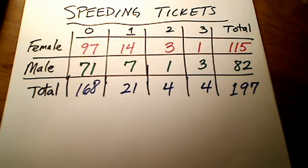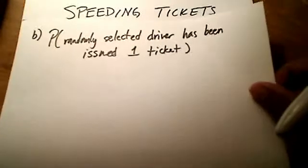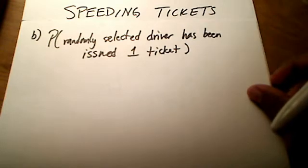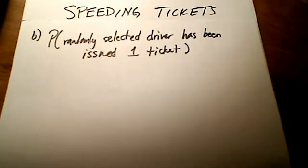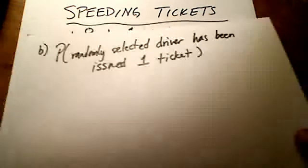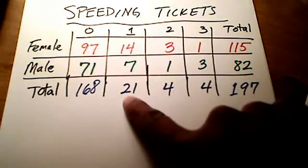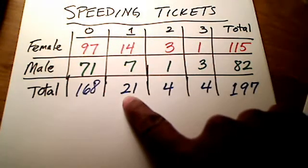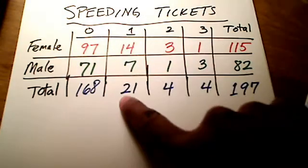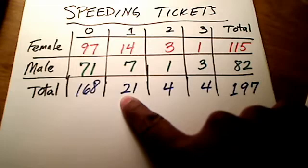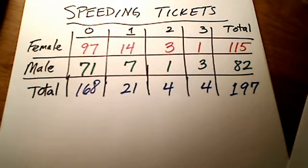Slightly different question now. What's the probability that we randomly select a driver who has been issued one ticket? We're looking for this one here. It's not the rows this time - we're looking for male or female, it doesn't matter. There were 21 people who had just one ticket issued.